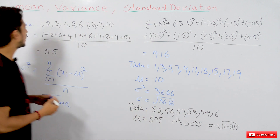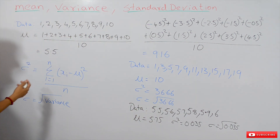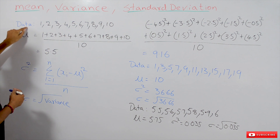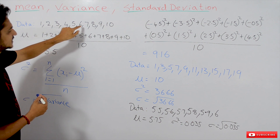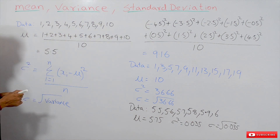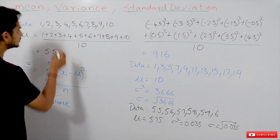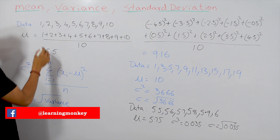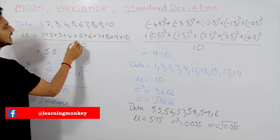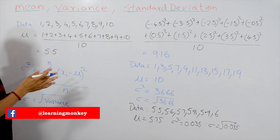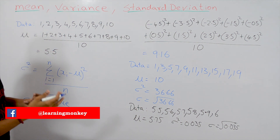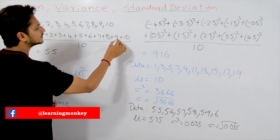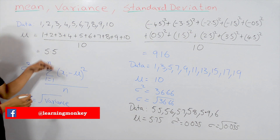Coming to mean — how to calculate the mean? This is the basic thing everyone knows. The data set given is: 1, 2, 3, 4, 5, 6, 7, 8, 9, 10 — a total of 10 values. To calculate the mean, sum all those values and divide by the total number of values, which is 10. So: 1 + 2 + 3 + 4 + 5 + 6 + 7 + 8 + 9 + 10, divided by 10.